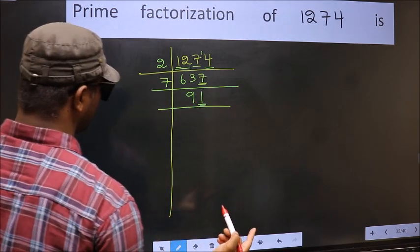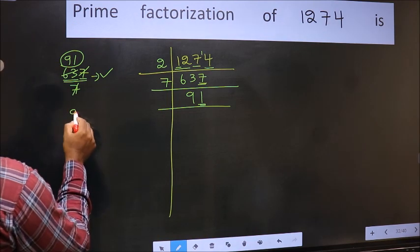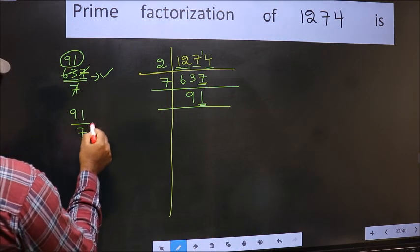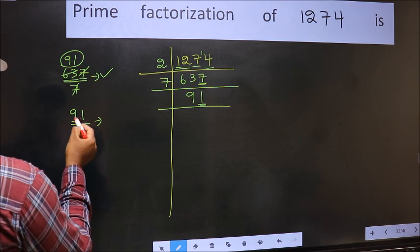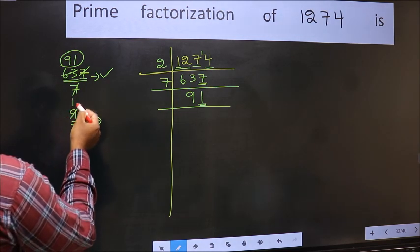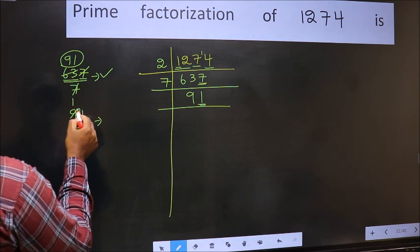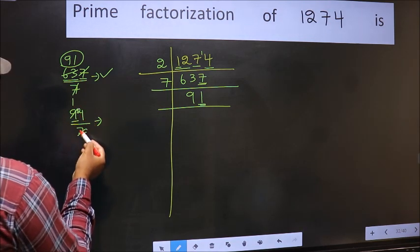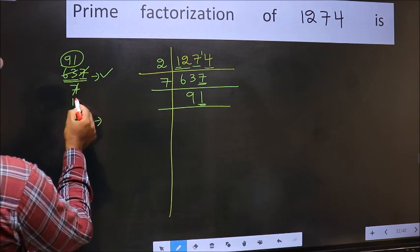Next prime number 7. Let us check divisibility by 7 here. A number close to 9 in the 7 table is 7, 1 is 7. 9 minus 7 is 2, 2 carried forward 21. When do we get 21 in the 7 table? 7, 3 is 21.